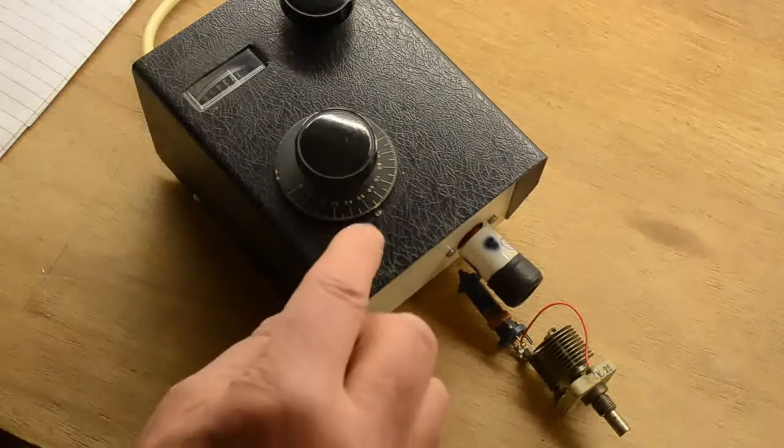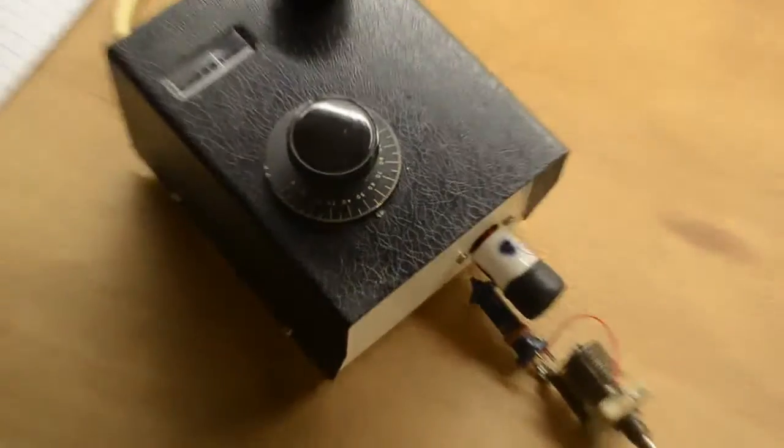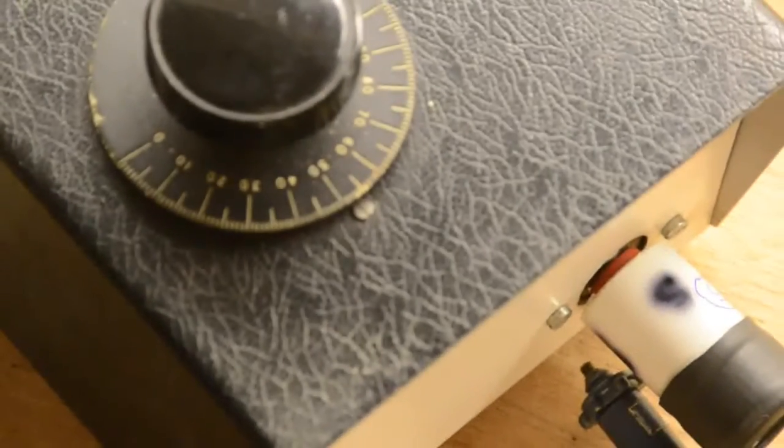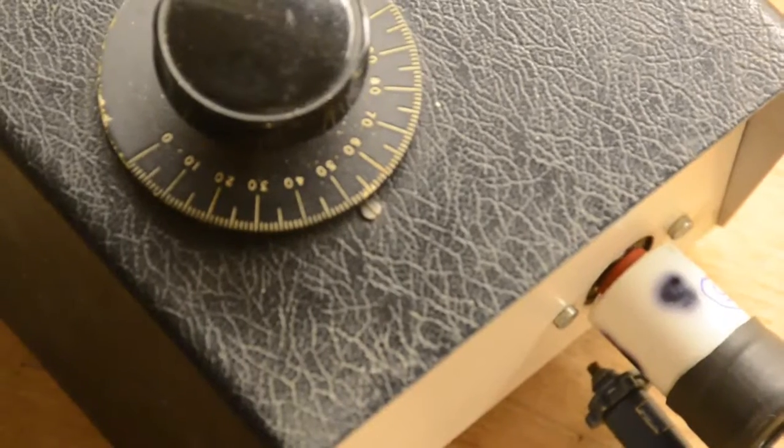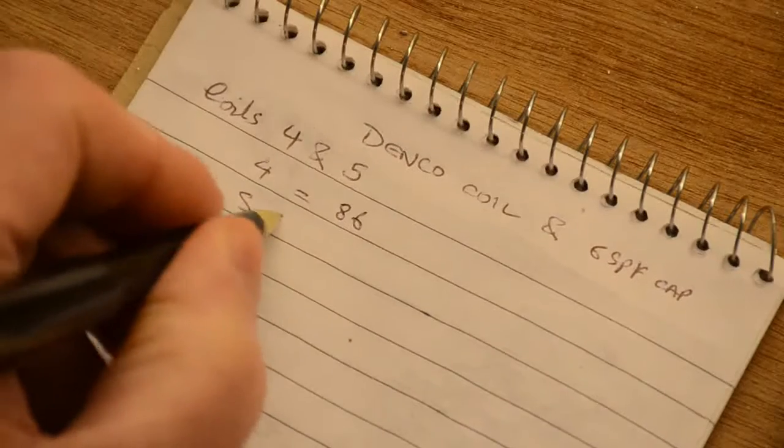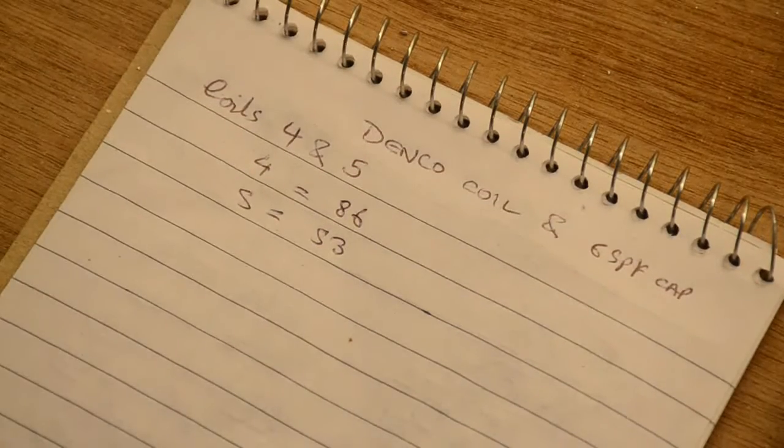Let's bring that a little bit closer. There's the obvious dip. The reading there is about 53. So coil 5 is 53. Now we have to cross-reference it on the chart.